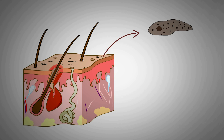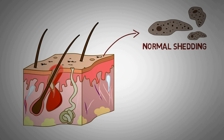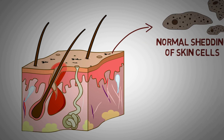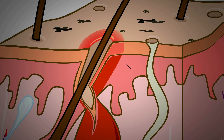Another factor that contributes to the development of acne is skin shedding. Our skin cells are shed continuously with a cycle of about 56 days. The same shedding of cells also occurs in the topmost portion of the hair follicle, and this is important as it contributes to one of the key factors in why acne develops.